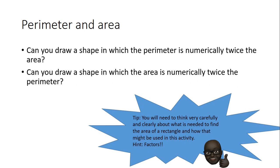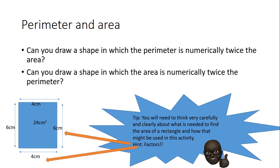Have a go at that. Pause the video as you need. Get some help if you want to talk to somebody who's available to talk to. With this, I've got a bit of a tip. You will need to think very carefully and clearly about what is needed to find the area of a rectangle and how that might be used in this activity. The hint here is factors. So factors—the four along the bottom along the width and the six along the length—these are both factors of 24. If I know my formula for my perimeter, I can see if there is a link between that and these factors that I found and the perimeter overall.